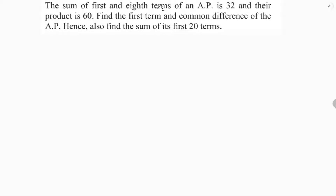The sum of the first and eighth terms of an AP is 32 and their product is 60. Find the first term and common difference of the AP, and hence also find the sum of its first 20 terms. So the first term plus eighth term equals 32, and the first term multiplied by the eighth term equals 60.